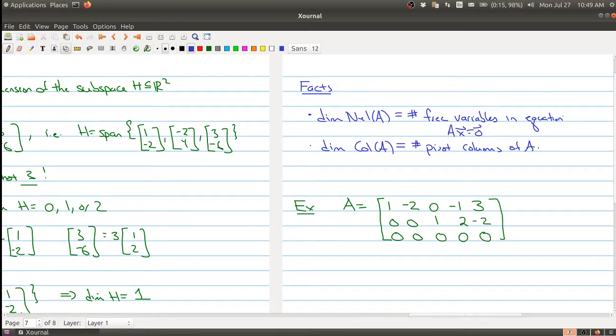So way back in week one I told you the importance of the free variables and the pivot columns. And again we're seeing that information is important because that's related to the dimensions of particular subspaces.